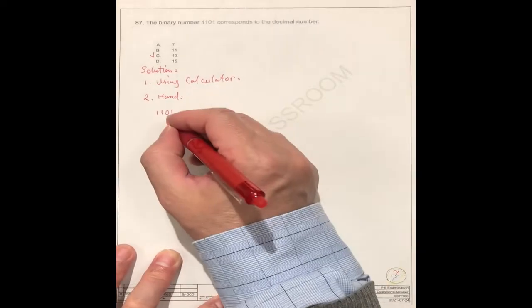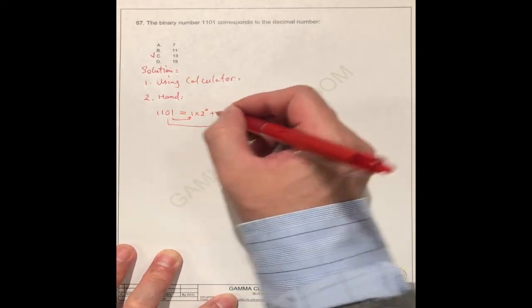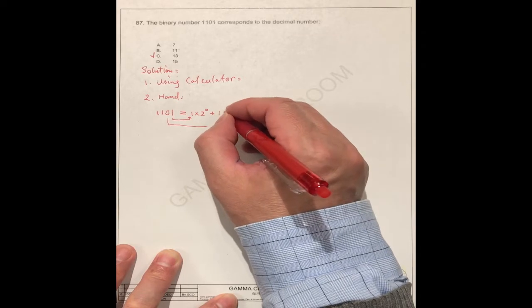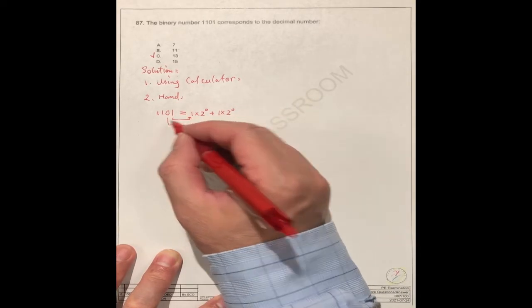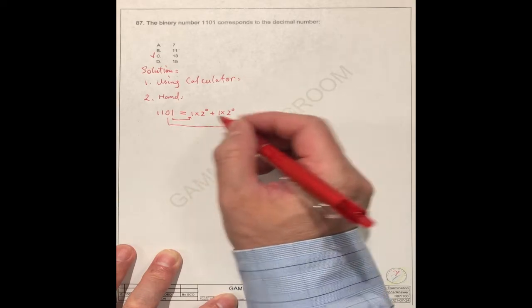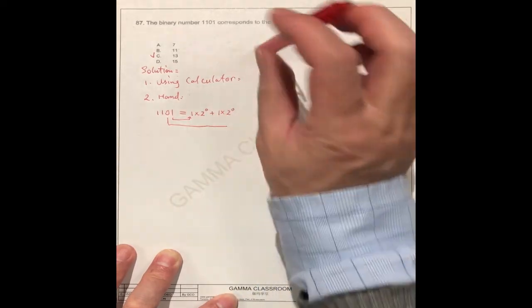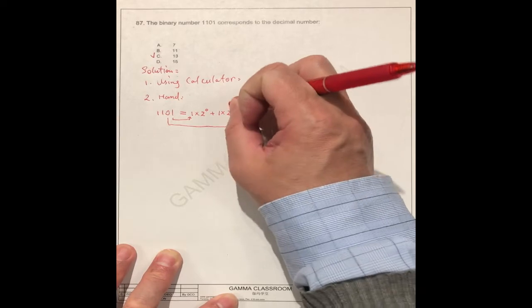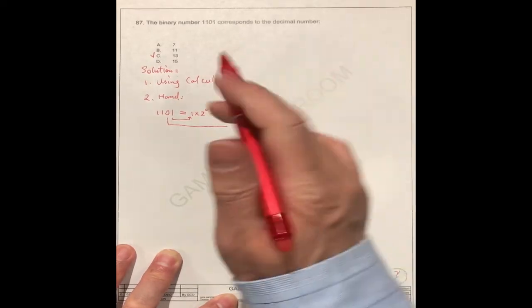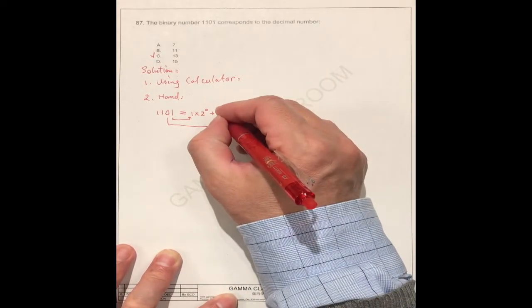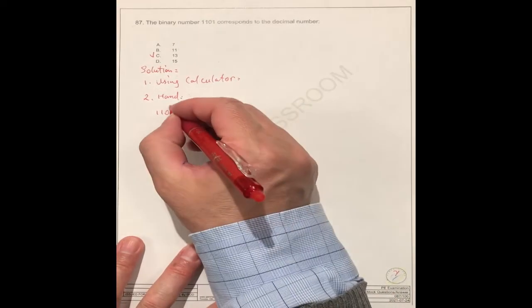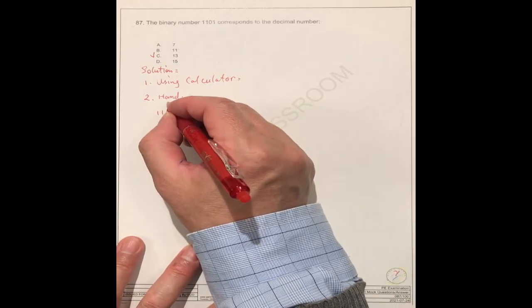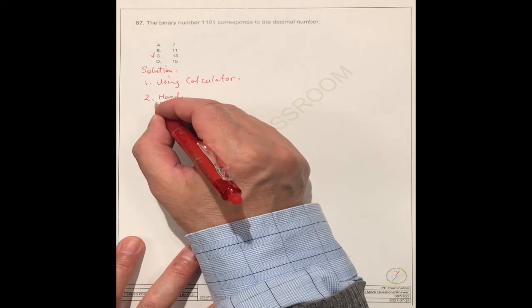How about this one? This is plus. One. Times 2. Zero. You see here. No, this is one. Sorry. This is 0 times 2 to the power 1. Because this is power 0, 0, 1, 2, 3. Yeah.